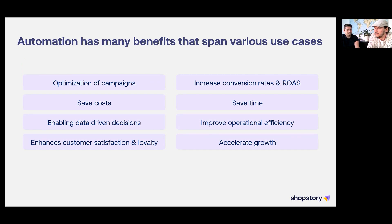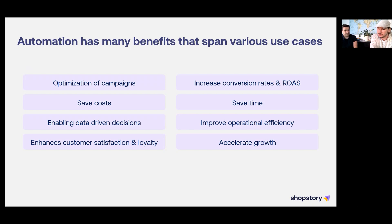Automating those areas comes with real benefits. For example, optimizing your campaigns could be great — through automation you could increase conversion rates or ROAS because you constantly adapt and optimize. You could also save costs and time, meaning you use your workforce and resources more efficiently. Automation also enables data-driven decisions because you can handle the mass of data generated through e-commerce way better, and you can improve operational efficiency, customer loyalty programs, and scale your growth as a business.